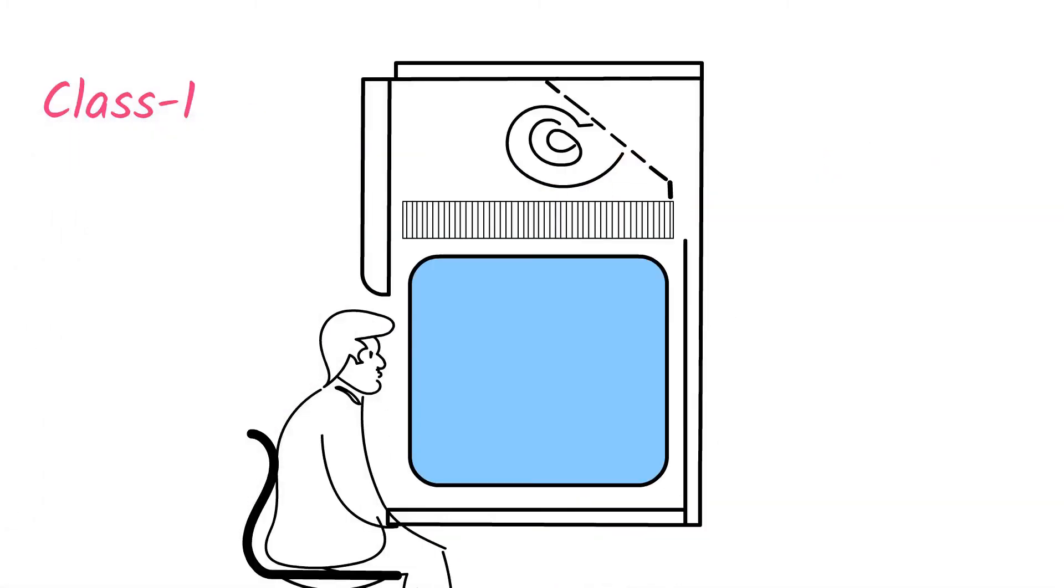Class 1 biosafety cabinets provide only the operator and environment safety. They do not provide product safety that is being handled. The Class 1 biosafety cabinets pull the surrounding air from the operator side. The air inside takes the particles away from the operator and then pass through the HEPA filter before it is discharged into the environment.